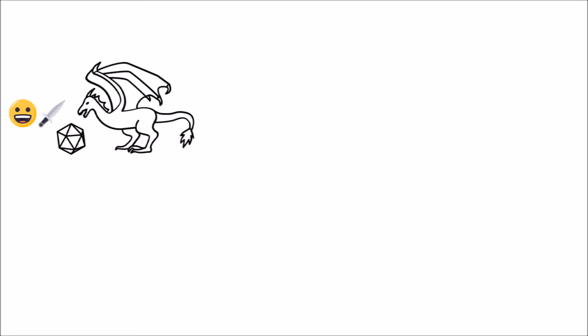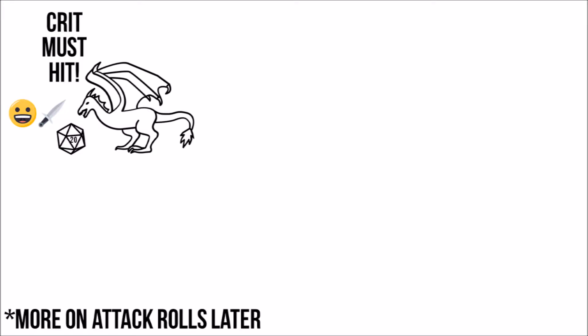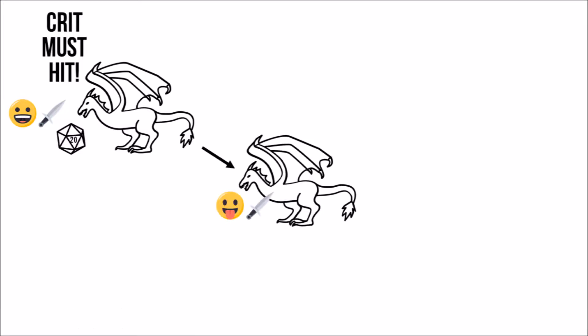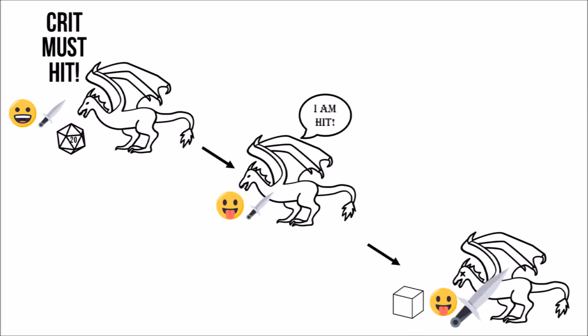In D&D, scoring a critical hit is awesome because one, you get to score an automatic hit no matter how weak your character is, and two, you get to apply a multiplier to your damage roll, usually times two. But this is where the confusion comes in.